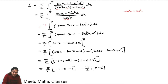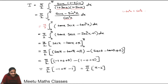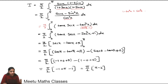Distributing the denominator: sinx/cos²x = tanx·secx, and sin²x/cos²x = tan²x. So the integral splits into tanx·secx minus tan²x. We replace tan²x with sec²x − 1, giving tanx·secx − sec²x + 1. The integrals are: tanx·secx → secx; sec²x → tanx; and 1 → x.